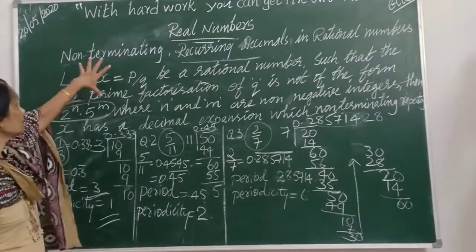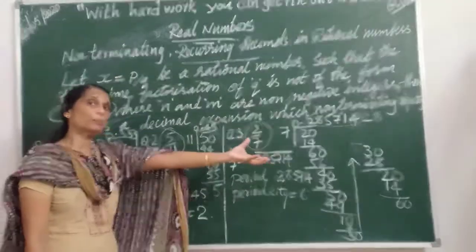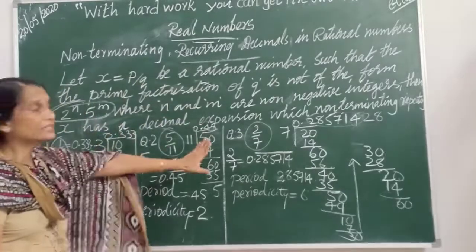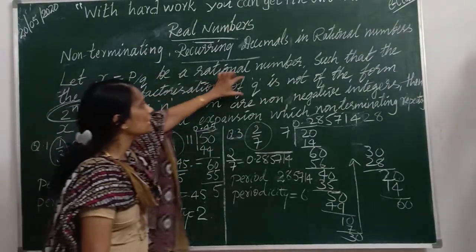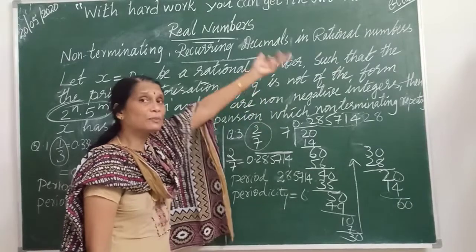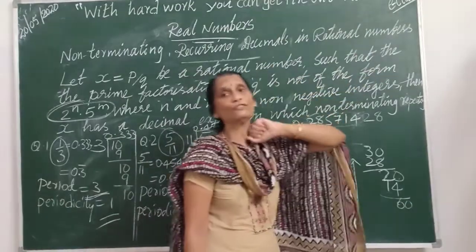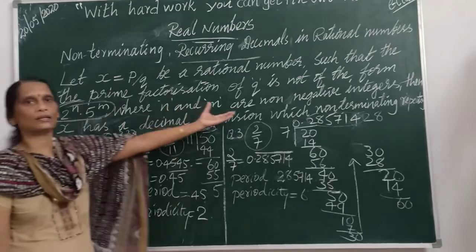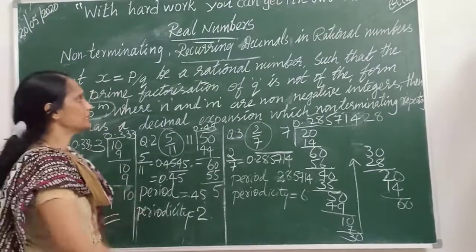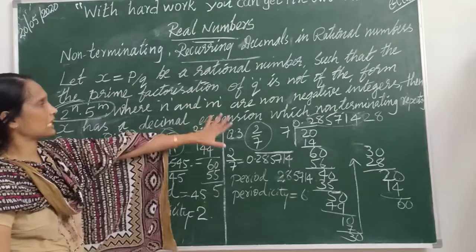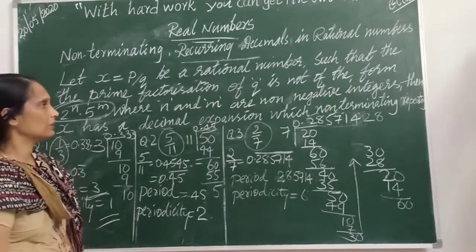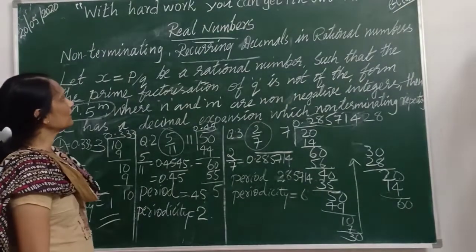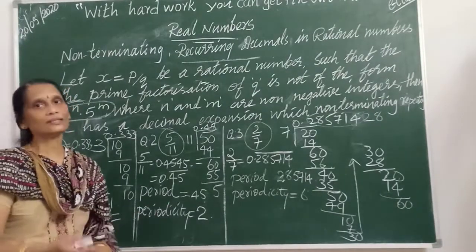So let X equal P by Q be a rational number such that the prime factorization of Q — the denominator — is not in the form of 2 power N into 5 power M, where N and M are non-negative integers. Then X has a decimal expansion which is non-terminating and recurring, or repeating. This is the theorem for non-terminating recurring decimals in rational numbers.